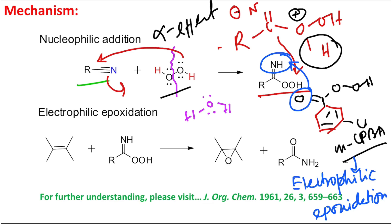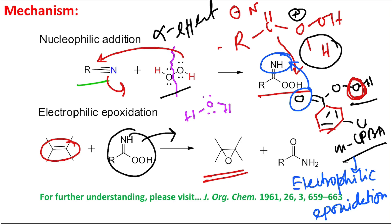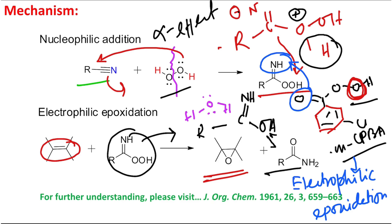The difference between this intermediate and MCPBA is that the oxygen is replaced by NH — everything else is analogous. This type of epoxidation is called electrophilic epoxidation. Just as MCPBA transfers its terminal oxygen to the alkene double bond to form an epoxide, this intermediate does the same. After oxygen transfer, the remaining fragment — R–C(=NH)–OH — tautomerizes instantly to the corresponding amide (R–CO–NH₂), so the final product is the amide.